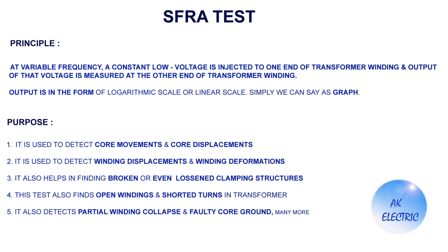Now let's see the purpose of this test. It is used to detect core movements and core displacements. It is used to detect winding displacements and winding deformations. It also helps in finding broken or loosened clamping structures. This test also finds open windings and shorted turns in transformer. It also detects partial winding collapse, faulty core ground, and many more.